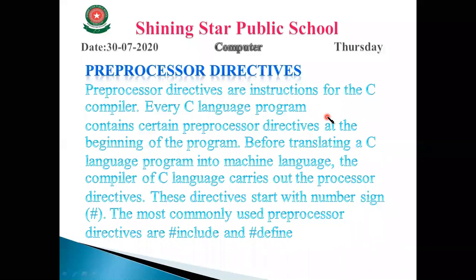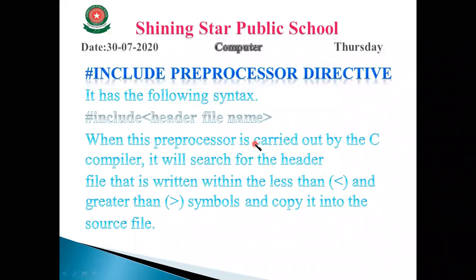The most commonly used preprocessor directives are hash include and hash define. Normally we use hash include in our programs in C language. Almost always we use hash include and we don't use hash define, so in this class we only learn how to use the hash include preprocessor directive.